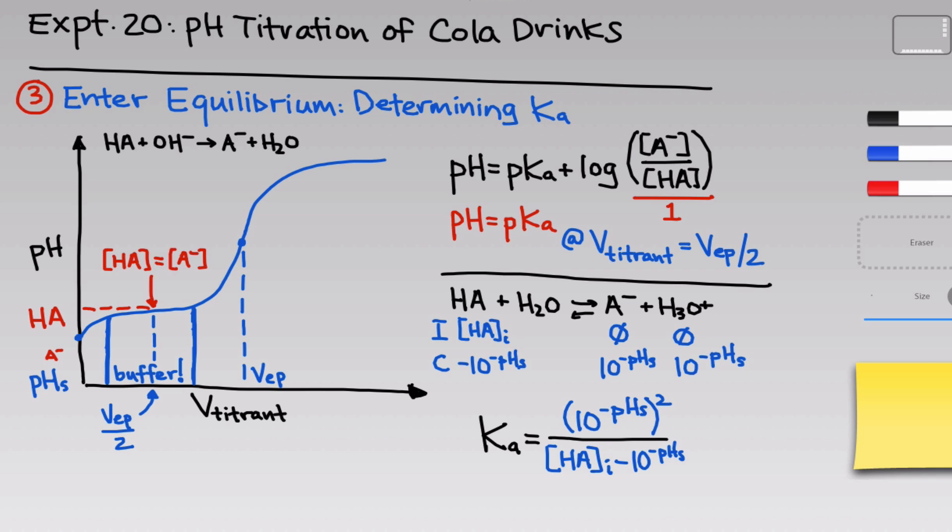That expression equals the Ka value, and we know everything in it: we measured pH_S before the titration began, and we can calculate [HA]_initial from the volume required to reach the equivalence point. So we simply plug in and calculate Ka. This is a second, algebraic ICE-table approach to calculating Ka that uses the titration data in a somewhat different way than the graphical method using V_EP/2.